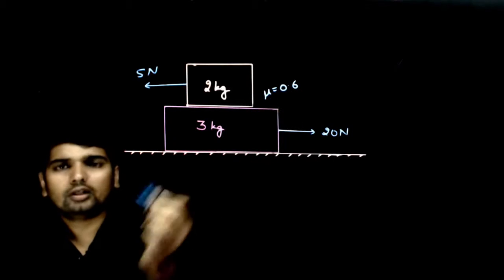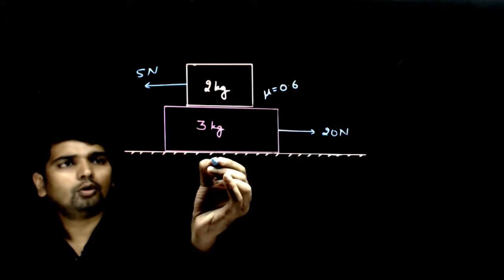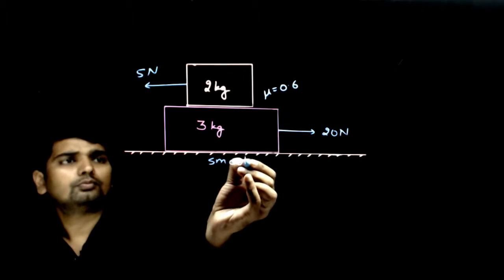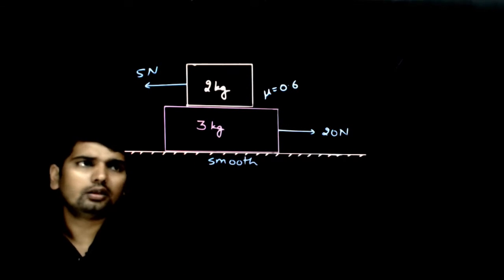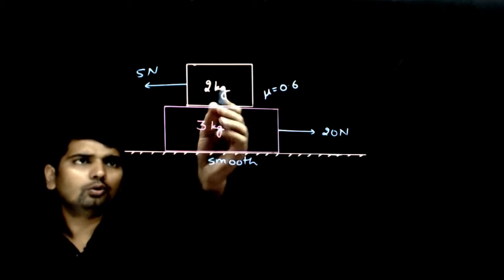The coefficient of friction is 0.5. It has also been said that the bottom surface is smooth. You have asked that in this condition, how much friction will be between both blocks?